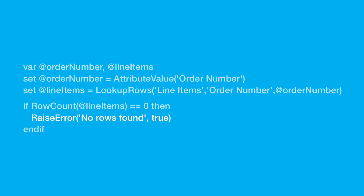Alternatively, if the email is being sent to multiple subscribers, we can include a boolean parameter to only skip sending the email to subscribers that have no line items.